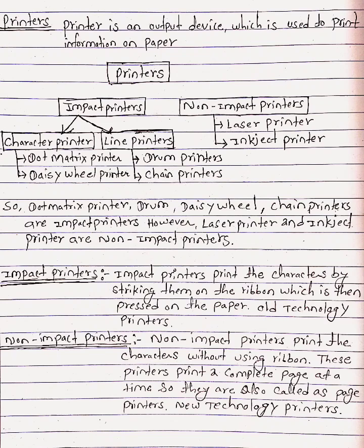Character printers are further divided into two parts: dot matrix printers and daisy wheel printers. Line printers are further divided into two parts: drum printers and chain printers.